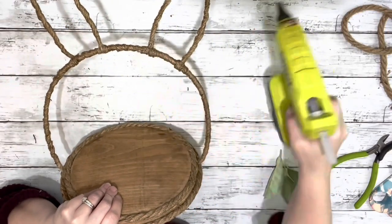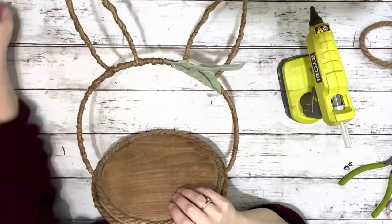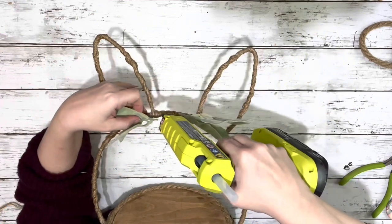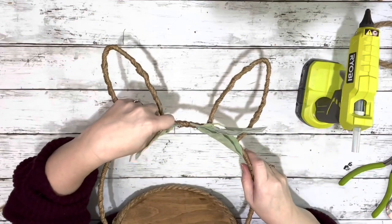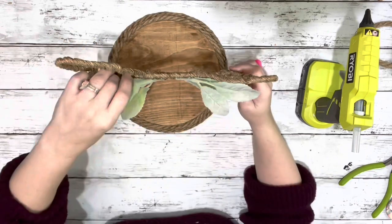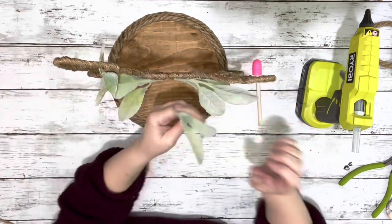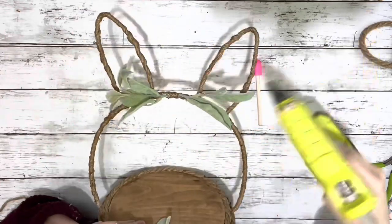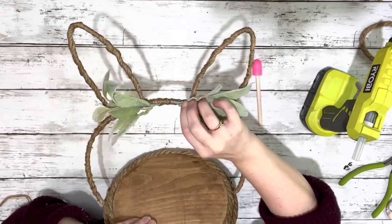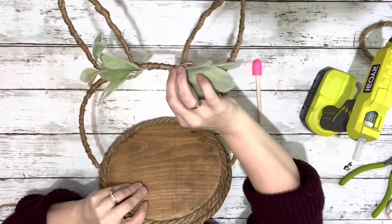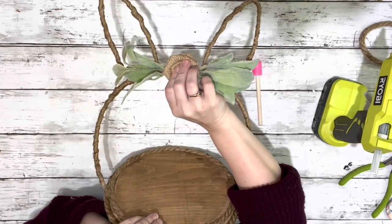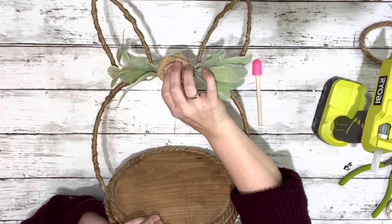The last thing I did was take the lamb's ear pick and just a couple little pieces from it and hot glued them to the top right in between the bunny ears. Then took the burlap flower and hot glued that right in between the greenery.